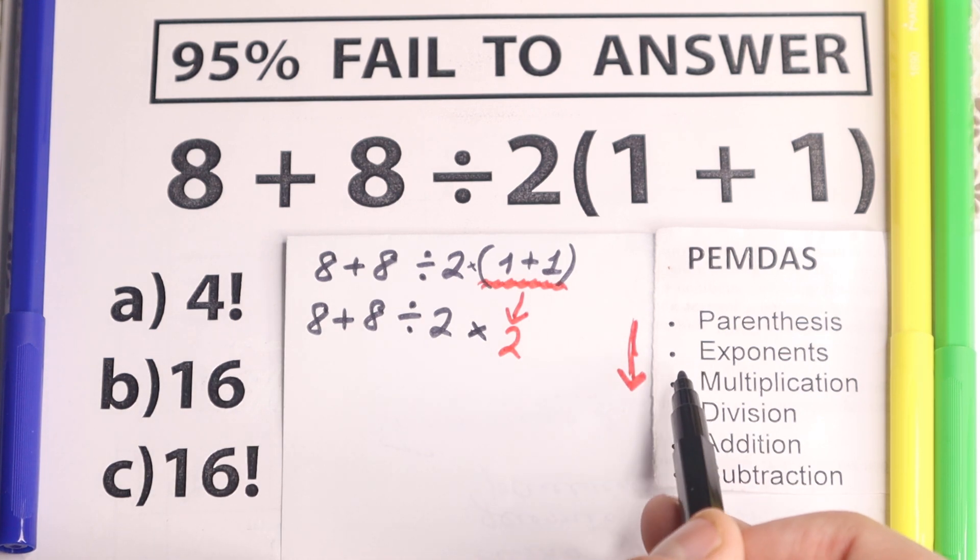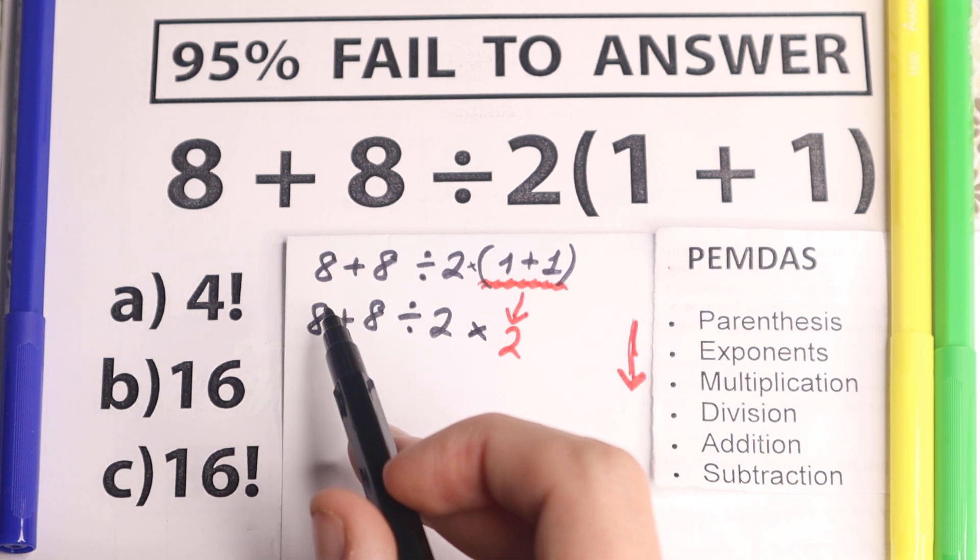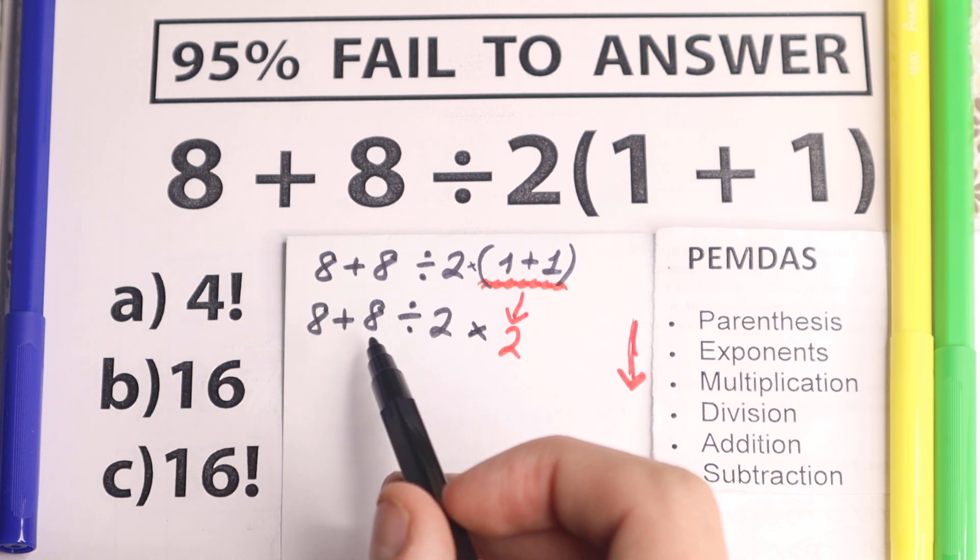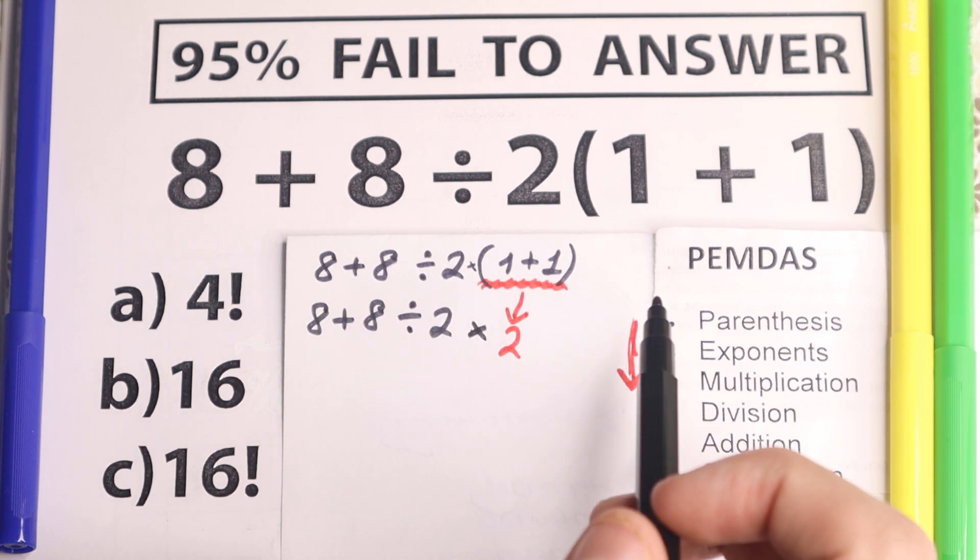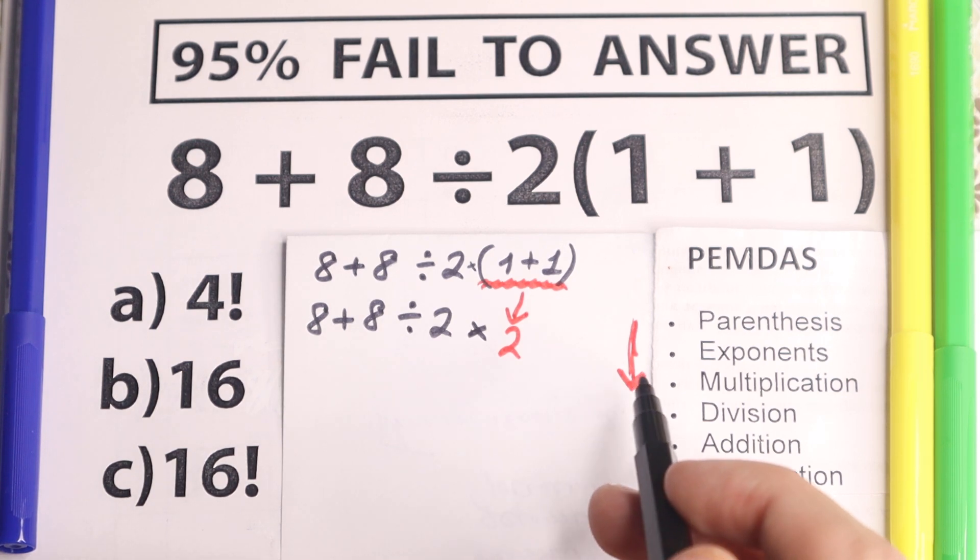The next step is exponents right here. Are there any exponents? So squares, cubes, fourth power, first power, no, I don't see any of those, we have only first power, which is really great. Let's go next.